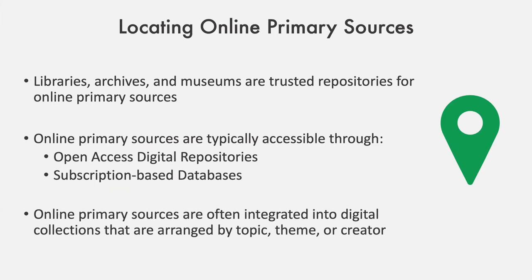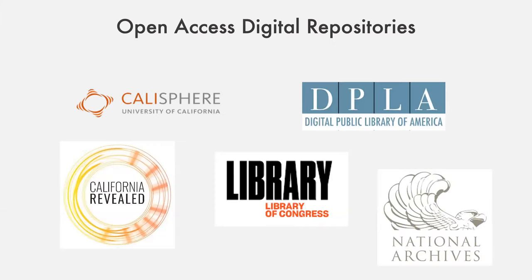Let's take a closer look at some open access digital repositories. The first is Calisphere, which provides online access to unique and historically important primary source materials from libraries, archives, and museums located throughout California. There's an emphasis on materials pertaining to the western U.S., but its coverage extends to include national and international topics. Similar to Calisphere is California Revealed, which provides online access to archival materials such as books, newspapers, photographs, and audiovisual recordings. All of these materials focus on stories and themes pertaining to the Golden State — it is California-centric and primarily contains audiovisual recordings, though they are starting to add additional content to that platform.